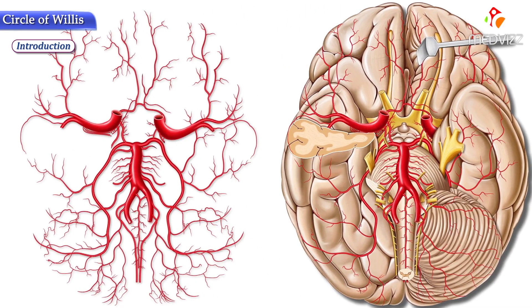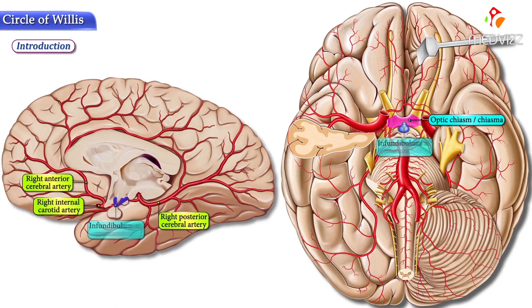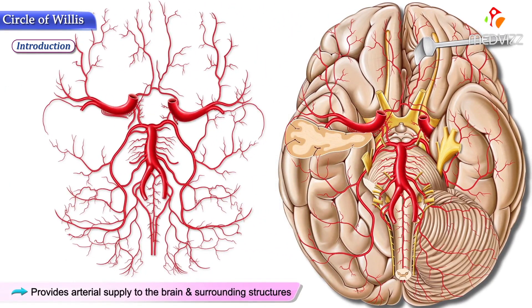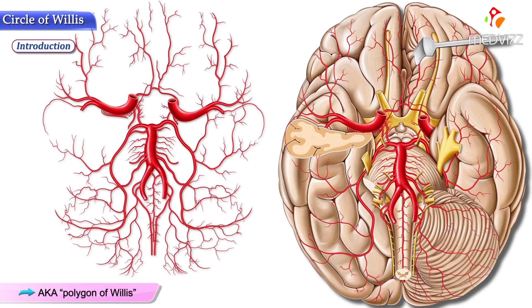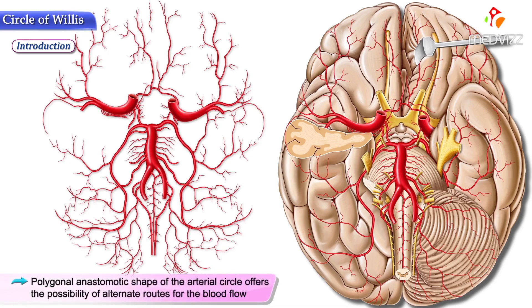The Circle of Willis is an arterial ring located at the base of the brain, around the optic chiasm or chiasma, infundibulum of the pituitary stalk, and the hypothalamus. This arterial circle provides arterial supply to the brain and surrounding structures. It is also referred to as the polygon of Willis, and this polygonal anastomotic shape offers the possibility of alternate routes for blood flow.